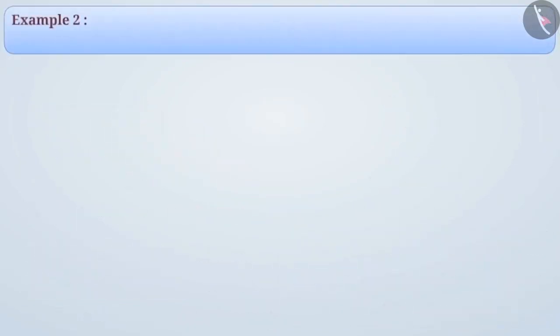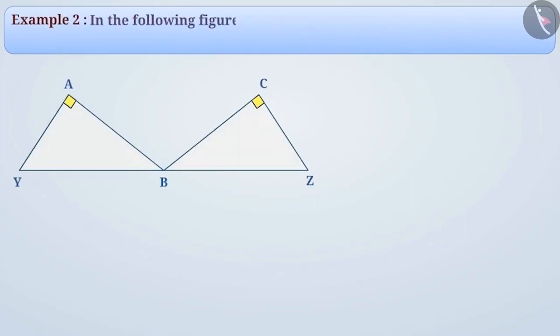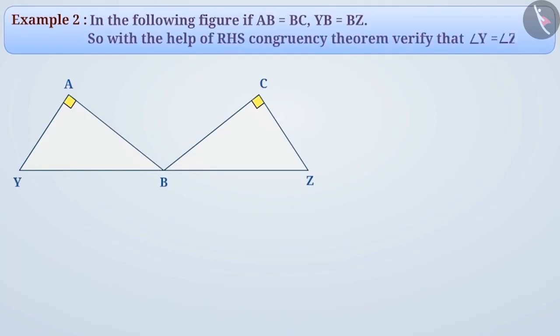Next example. In the following figure, if AB is equal to BC, YB is equal to BZ. So, with the help of RHS congruency theorem, verify that angle Y is equal to angle Z.